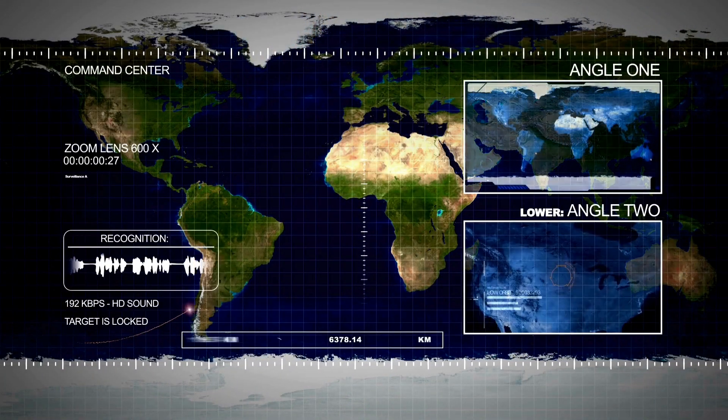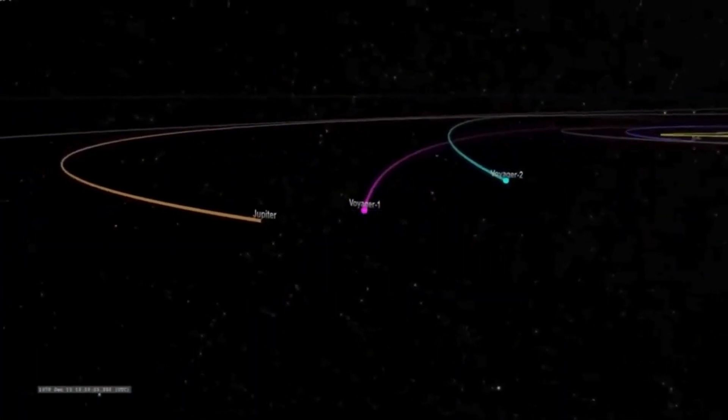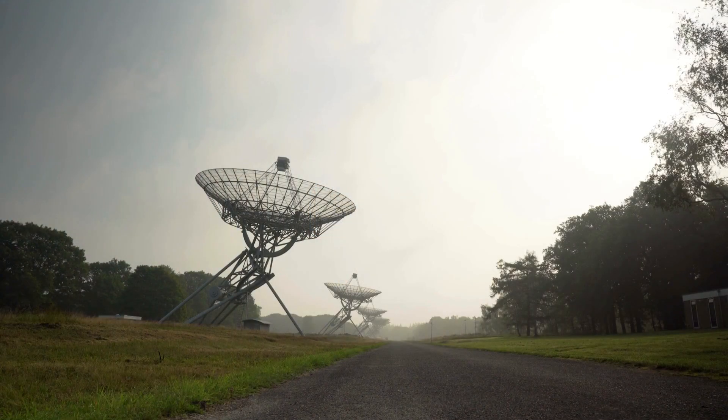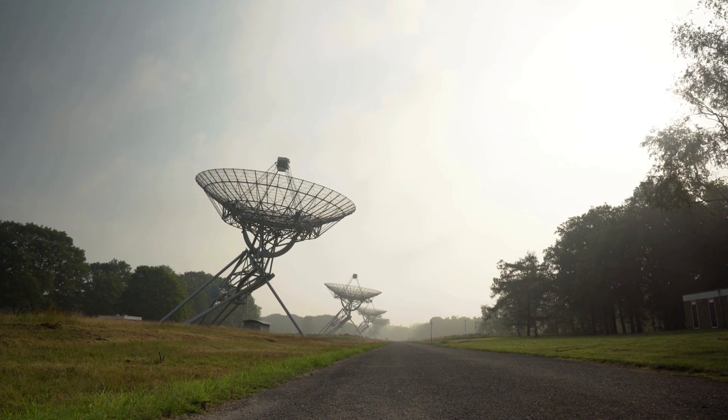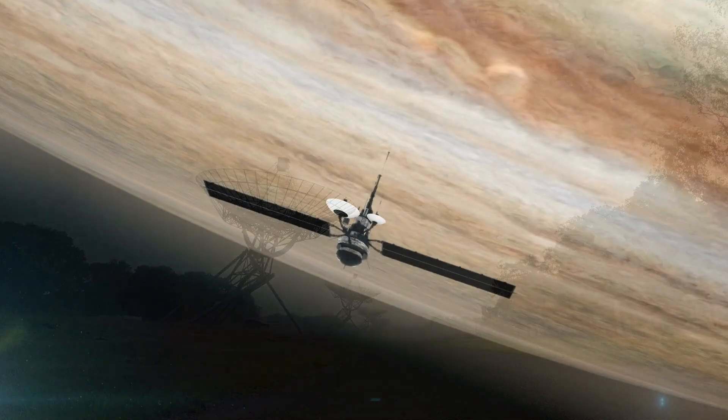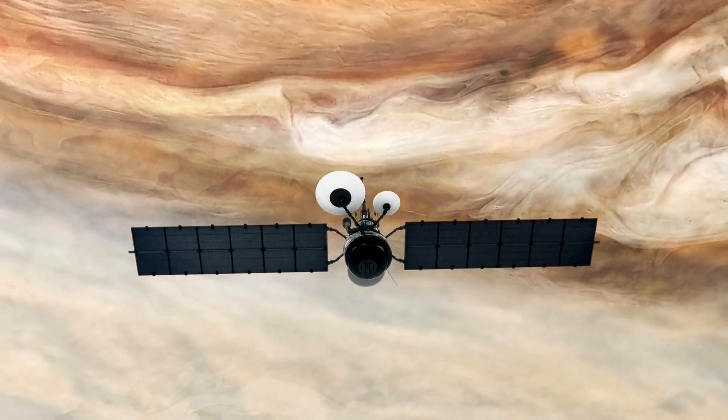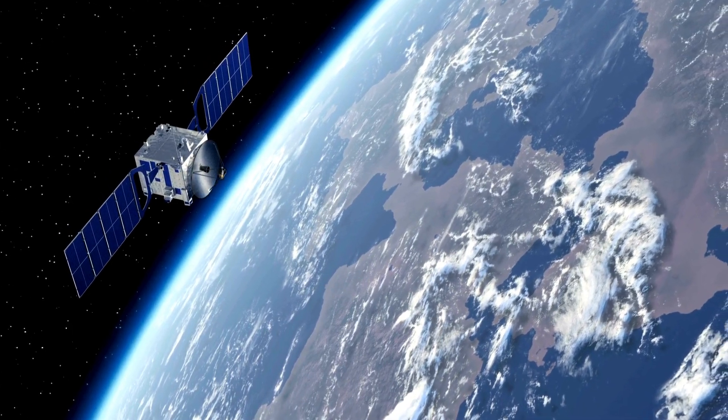After some inventive sleuthing, the mission team can, for the first time in five months, check the health and status of the most distant human-made object in existence. For the first time since November, NASA's Voyager 1 spacecraft is returning usable data about the health and status of its onboard engineering systems. The next step is to enable the spacecraft to begin returning science data again.